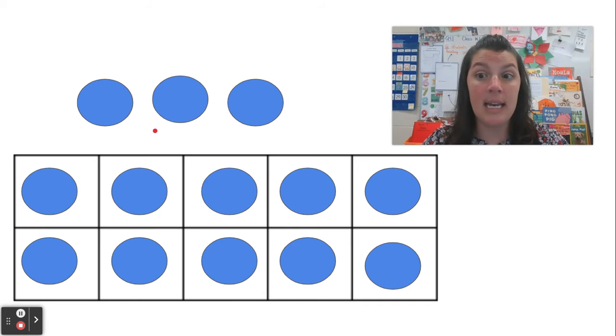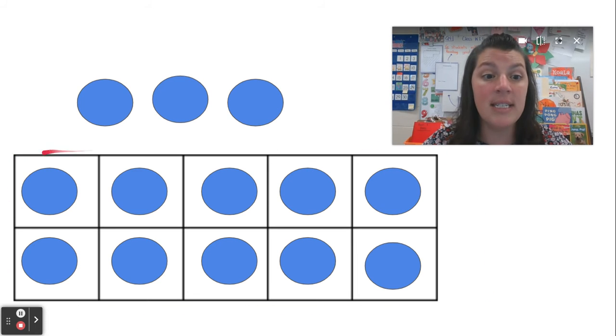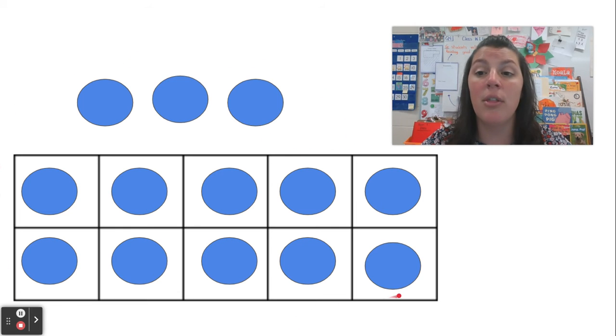So this picture helps me to see that there is a group of dots here that I know is 10. And then there are three more. And that is the number 13. So let's look at another one.